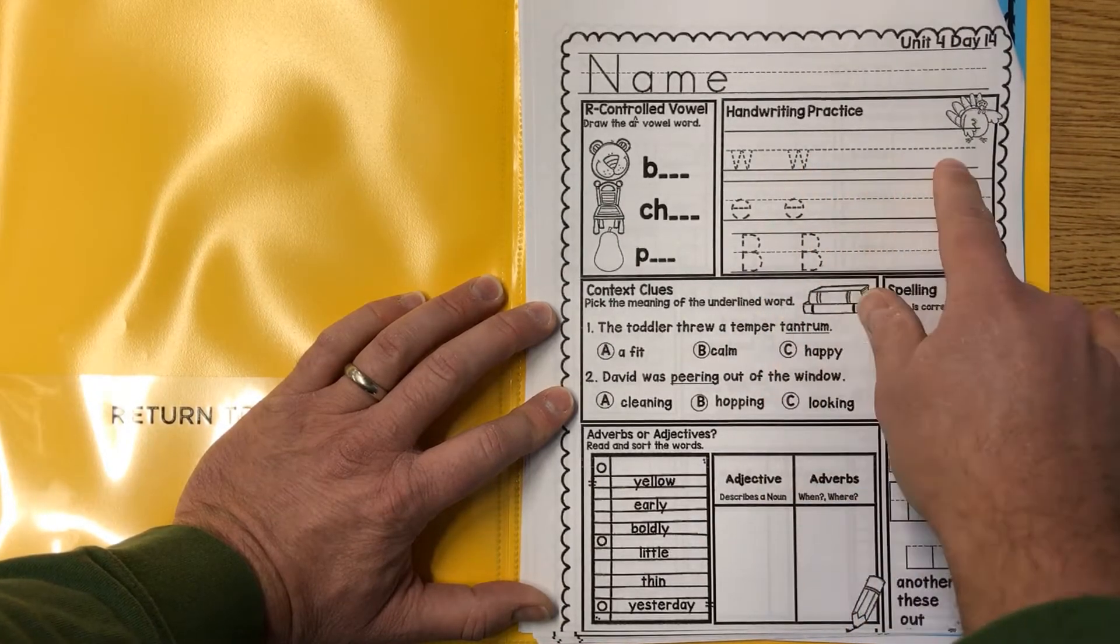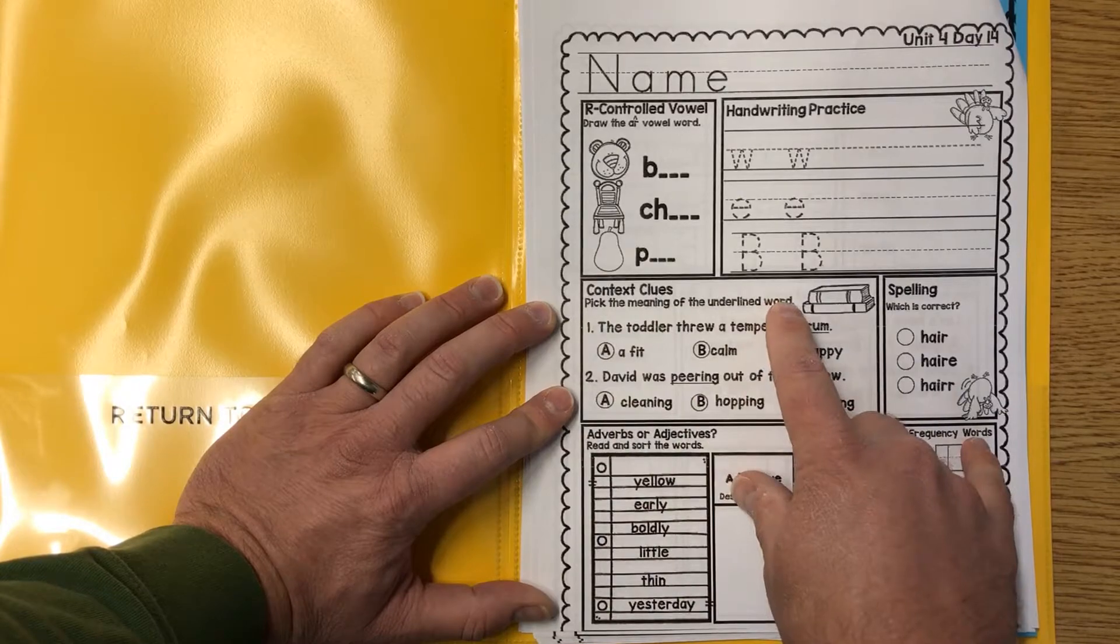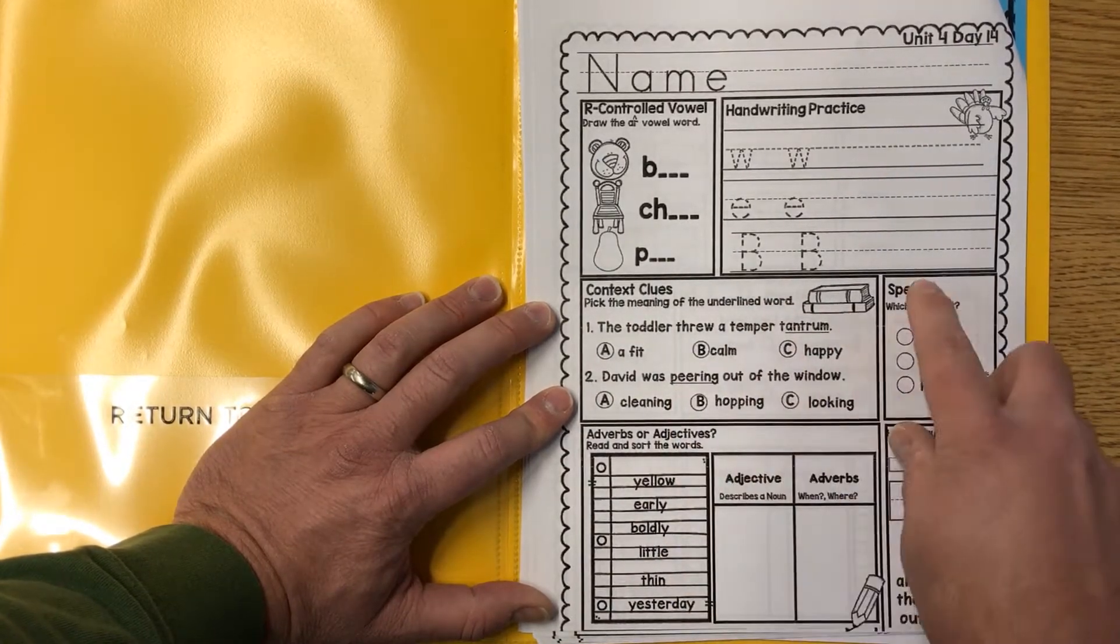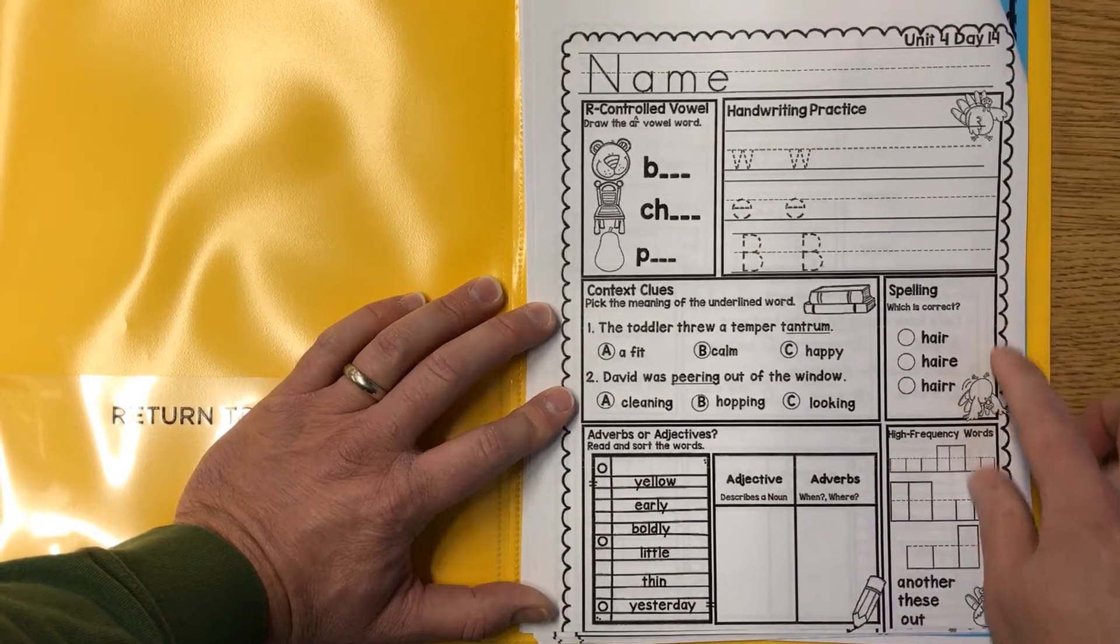Same thing here and same thing here. Context clues, pick the meaning of the underlined word for tantrum and peering. Spelling, which is correct. Hair, hair.